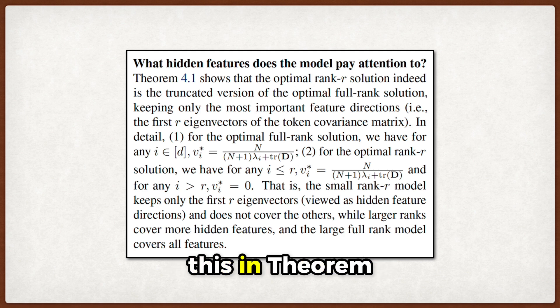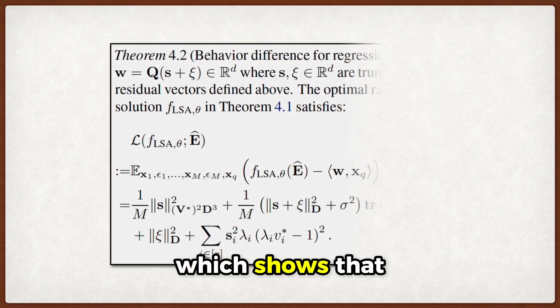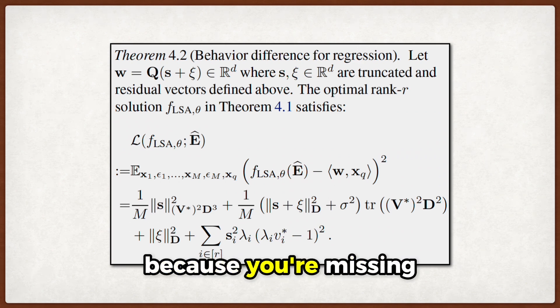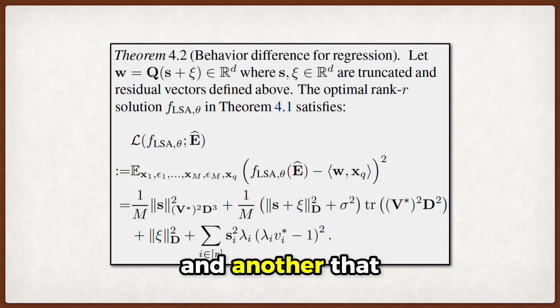They formalize this in theorem 4.2, which shows that the evaluation loss has two competing terms. One that decreases with model size because you're missing features, and another that increases because you're picking up more noise.